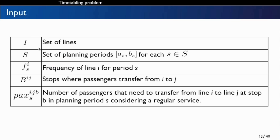The input is a transit network represented by two sets: the set of lines I and the set of planning periods S, where each planning period is defined by a time interval [A_s, B_s]. For each planning period, we have a frequency for each line. For each pair of lines, we have a set of transfer stops. We assume constant demand and the number of passengers transferring is proportional to the bus load, so we can define the number of passengers that need to transfer at each specific stop in each planning period.